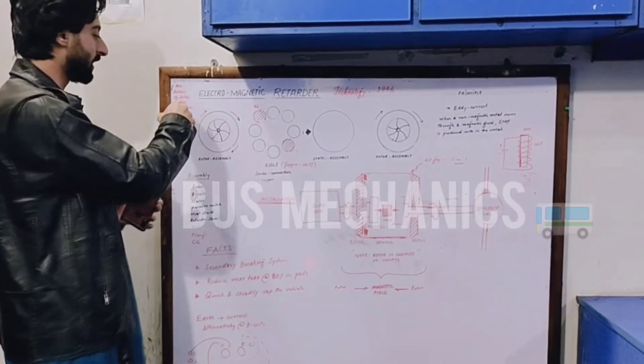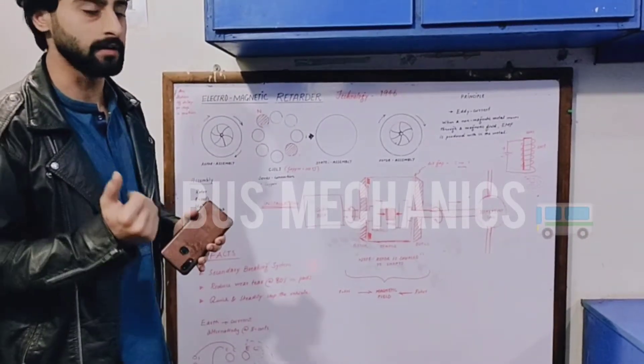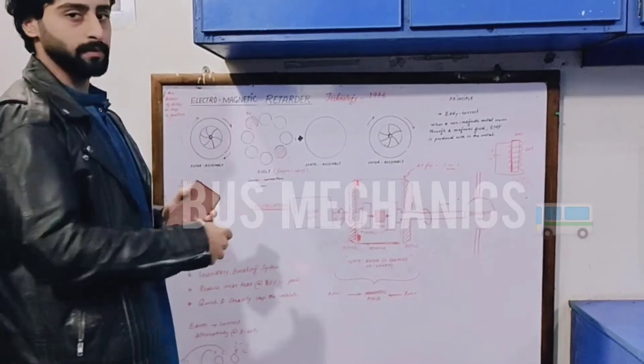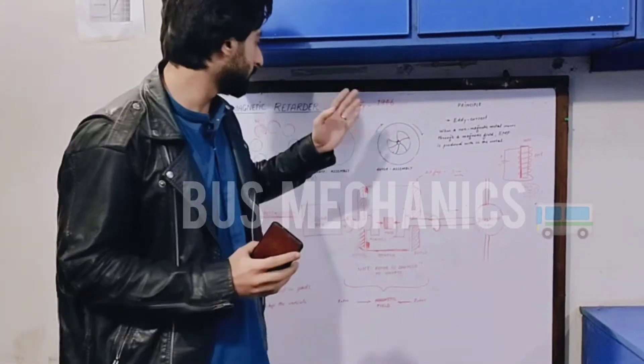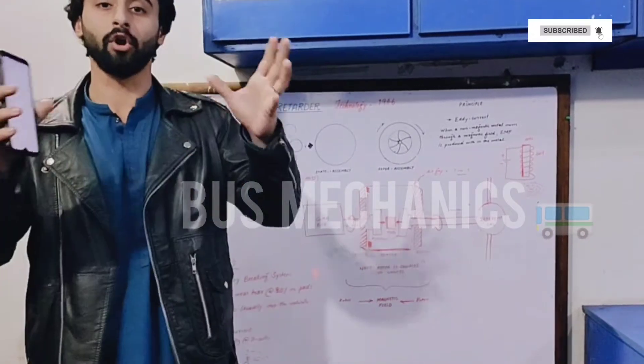An action which delays motion is called a retarder, and retarders work on the principle of electricity. This technology was introduced to the world in 1947.